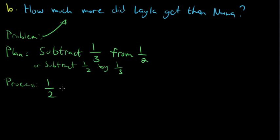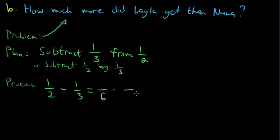So we have one half minus one third — what Lila got minus what Nana got — to find how much more Lila received. Again, we can only add or subtract fractions if they have the same denominator, so we repeat the process from before, but using subtraction instead. We need two equivalent fractions — one half and one third — each with a denominator of 6. We already know the LCM of 2 and 3 is 6, and the equivalent fractions are 3 over 6 and 2 over 6, just as before.